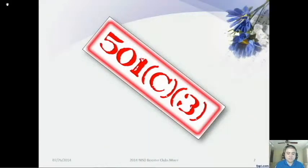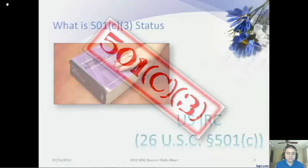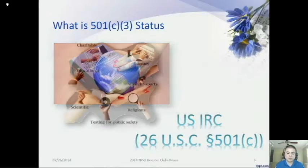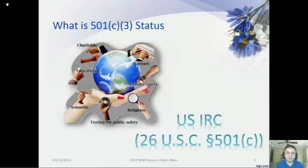501 status. What is a 501 designation? Section 501 of the United States Internal Revenue Code defines 29 types of nonprofit organizations exempt from some federal income taxes.